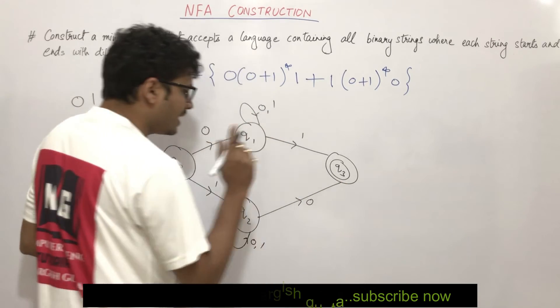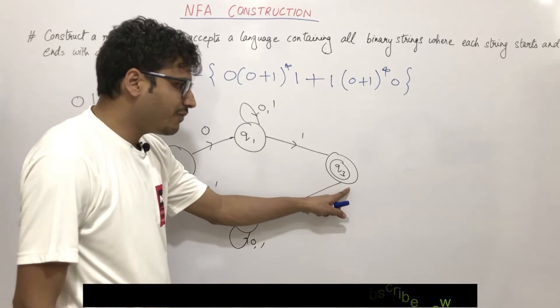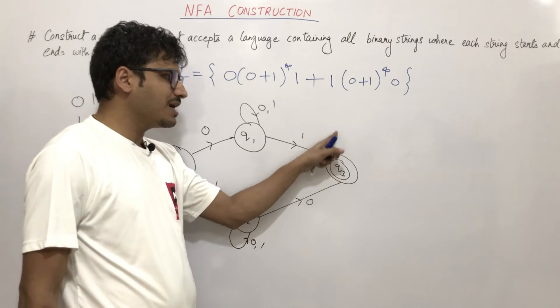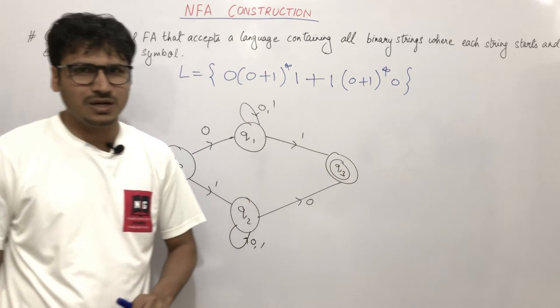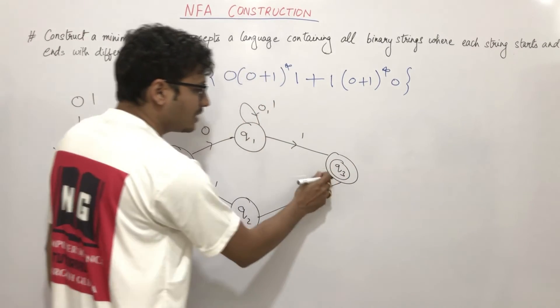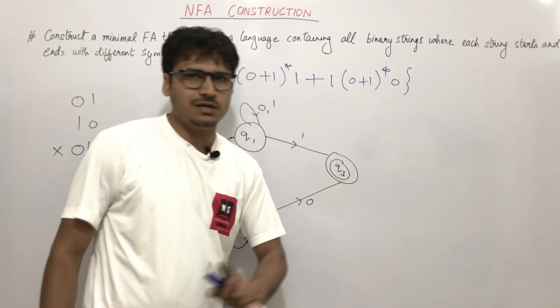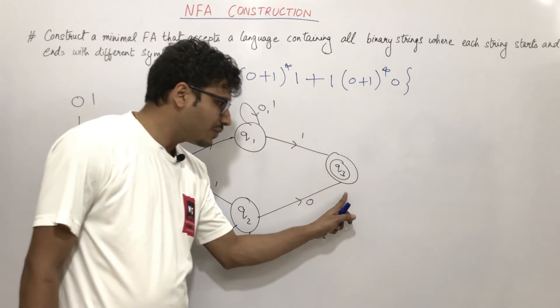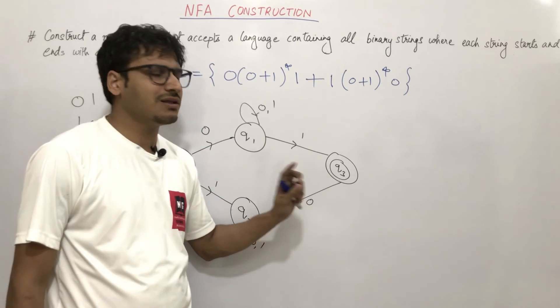We would have to show transitions here, and show 0 and 1 transitions. If we cannot do that, we would need a trap or dead state. But because we are constructing NFA...